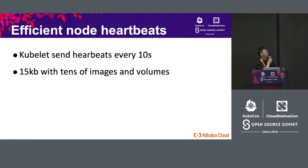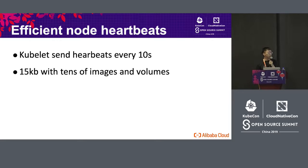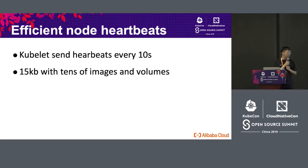Without further ado, I will start to talk about efficient node heartbeats. For our Alibaba, we use the 1.10 version of Kubernetes. If we want to scale it to 10,000 nodes or even higher, one of the biggest problems is how to deal with node heartbeats. With many nodes, the heartbeat traffic will be very high. Every 10 seconds, Kubernetes sends heartbeats. For production nodes there will be a lot of images and volumes, and the heartbeat payload can be as large as 15 gigabytes with tons of images and volumes.